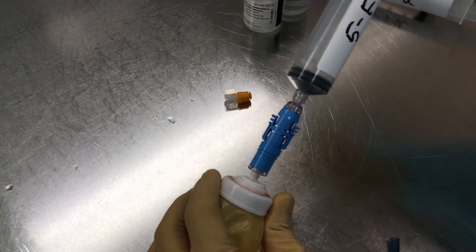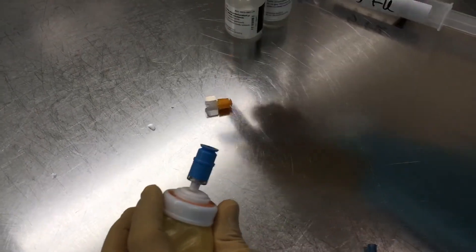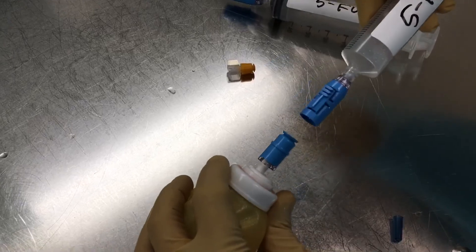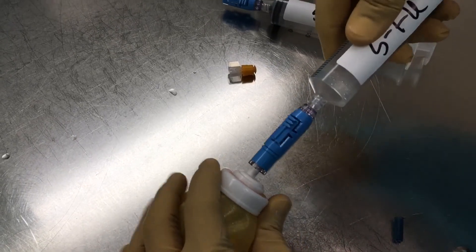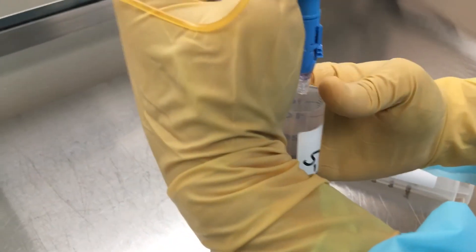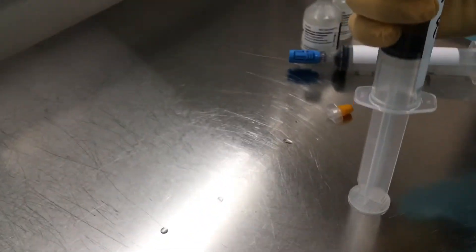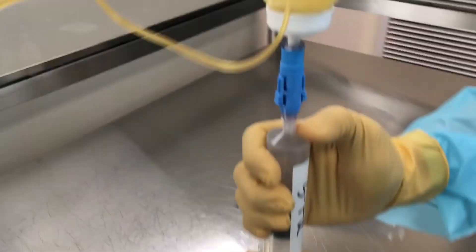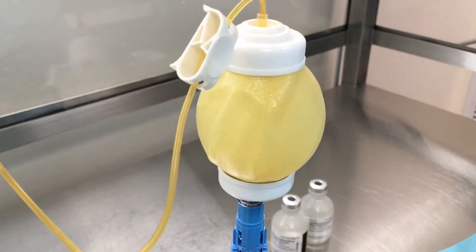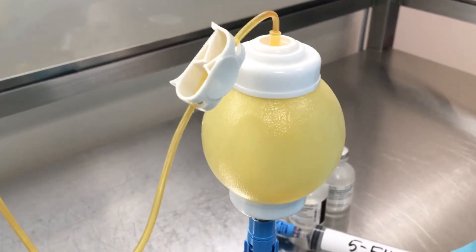This is your 5FU going into the pump. That's the rest of it. Large volumes are easier to rest on a bench and just flush it in.